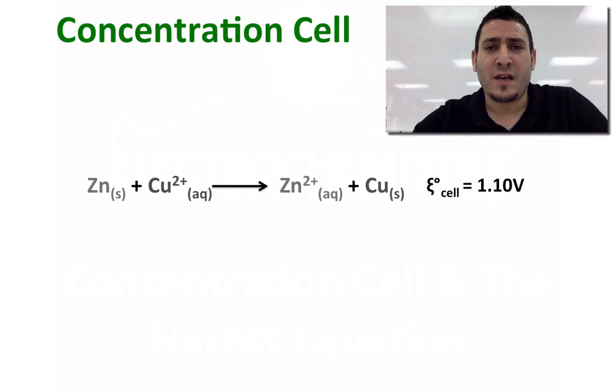Consider the following redox reaction for a galvanic cell at standard conditions where you have zinc at the anode and copper at the cathode, and the standard cell potential is 1.10 volt.